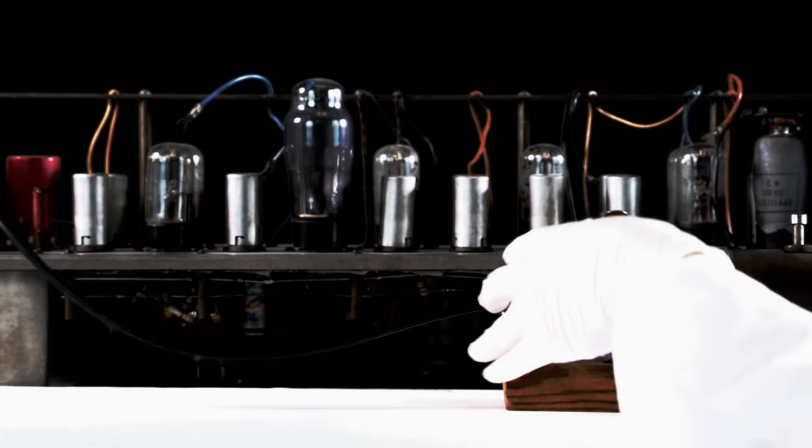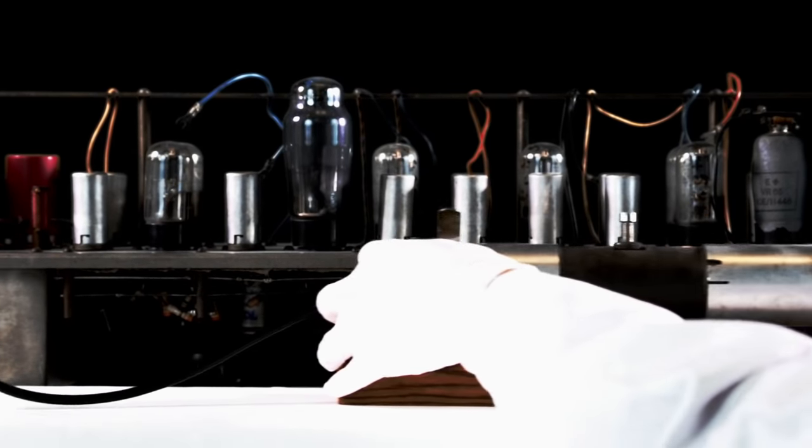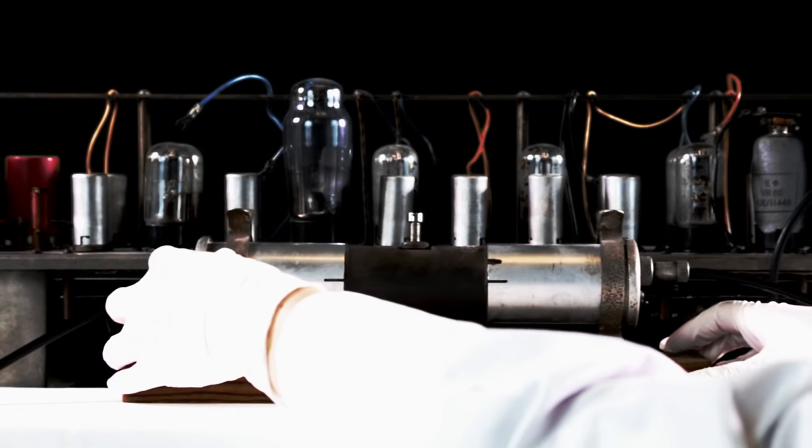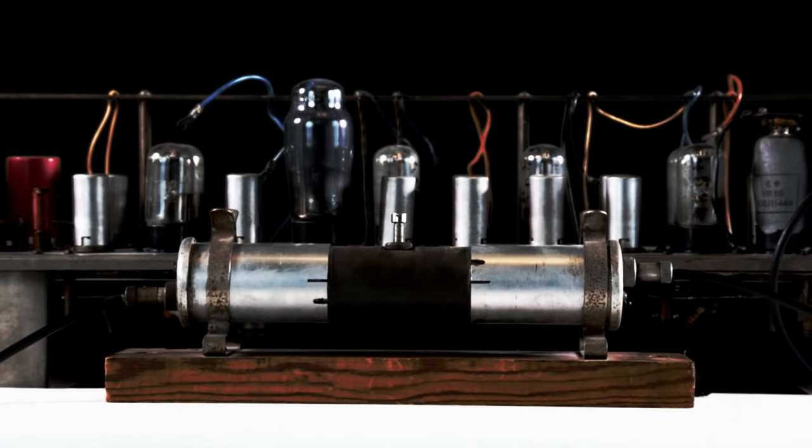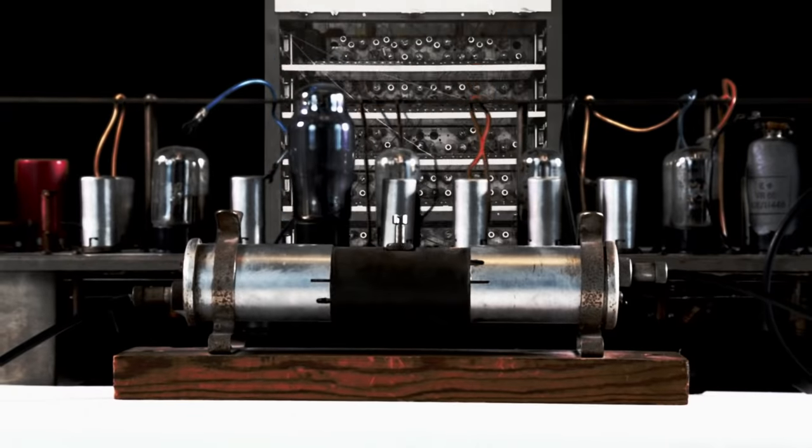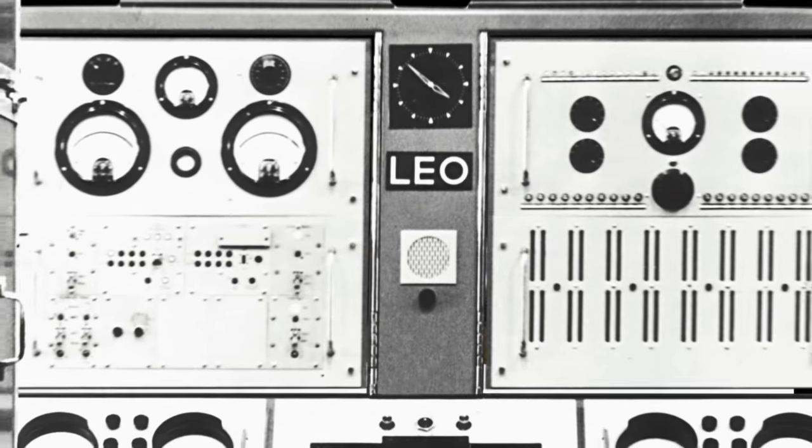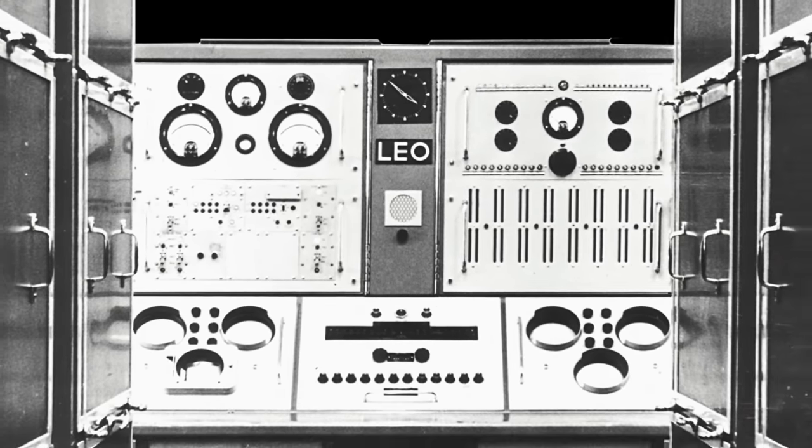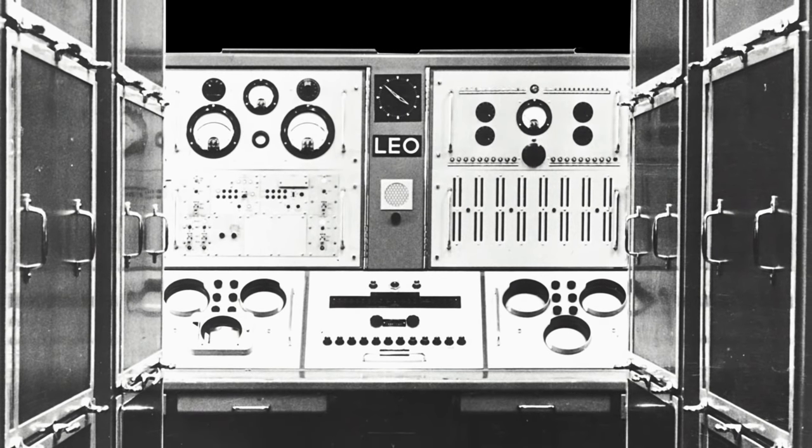This is a piece of the world's first business computer. Is it from IBM? Hewlett-Packard? Microsoft? No, they were beaten to it by J Lyons & Co, a company better known for making cakes. And if history had gone a little differently, you might be watching this on a Leo.